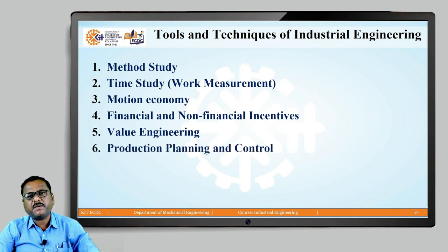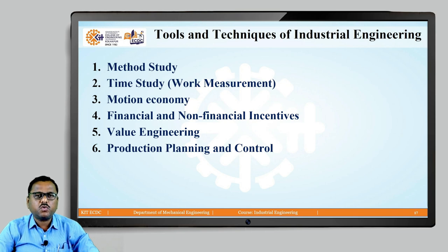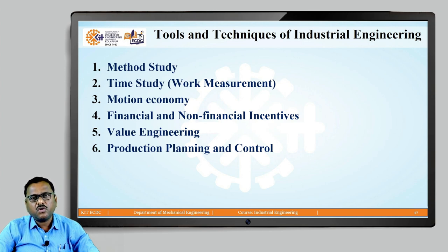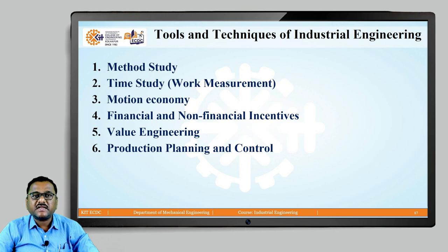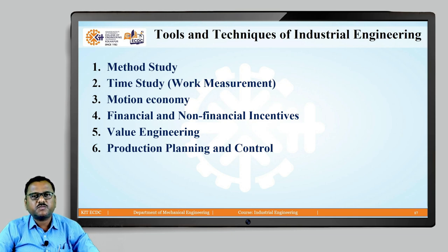The next tool is production planning and control, recognized as a separate department called the PPC department. It involves planning regarding production and at the same time maintaining a continuous watch on activities to know whether the present activity is going on as per the plan or if there is any deviation. If there is a deviation between actual and planned performance, the control function comes into the picture. Production planning and control helps decide whether we are on the right track and whether it is possible to fulfill commitments already given to the customer.